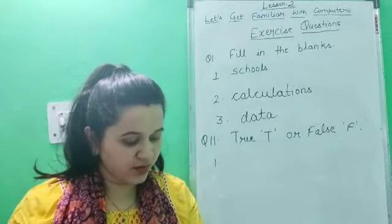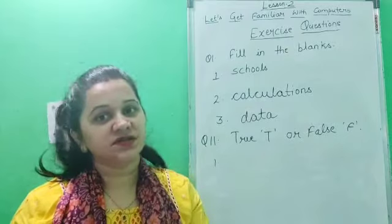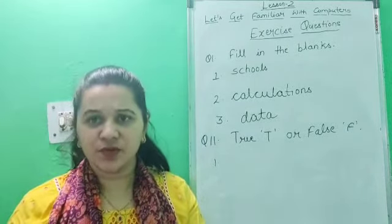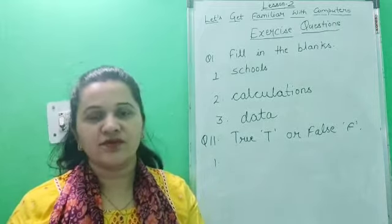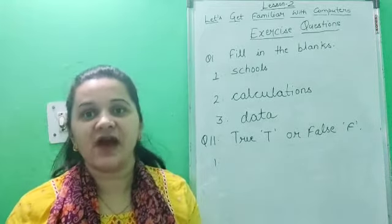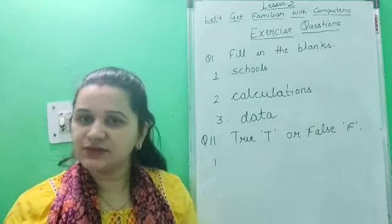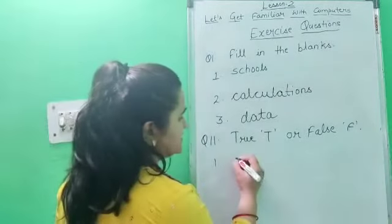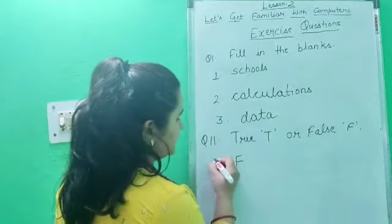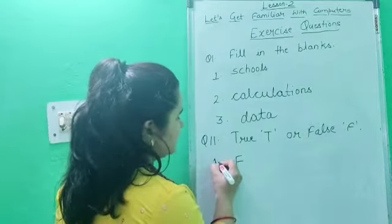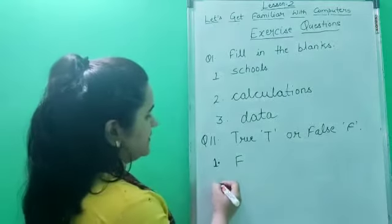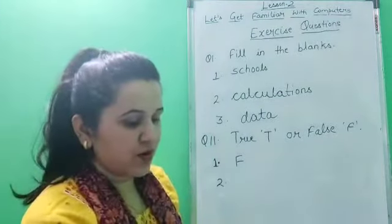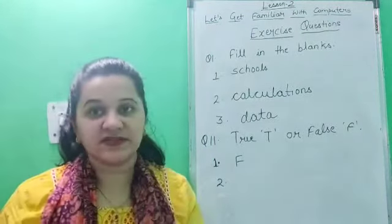The first statement is: computers work very slow. Is it, children? No — a computer works faster. So this statement is wrong. What do you have to write down in front of it? Yes, F. The first statement is false, children. Got it? Now move on to page number 16.